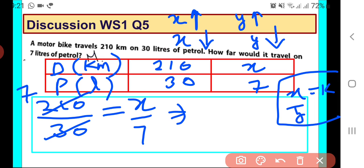What is the value of x? This implies we get x is equal to 49. So you will be writing the final answer in the statement that motorbike would travel 49 kilometers in 7 liters of petrol. I hope the question is clear to you.